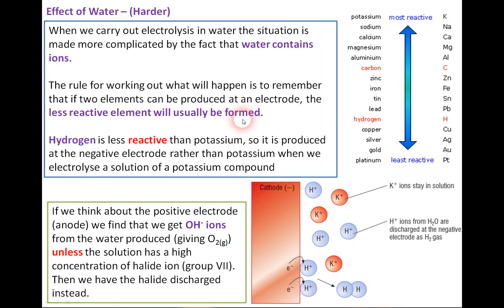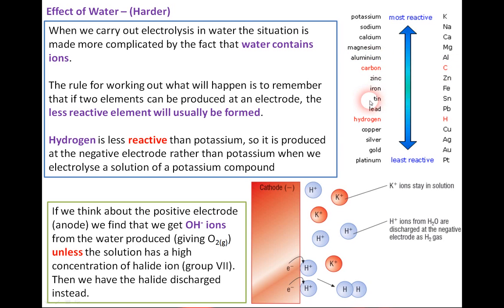The less reactive element will tend to form rather than react with other species. We use the reactivity series — here you can see it for metals, with hydrogen and carbon also included. It's useful to note that lead and copper sit below hydrogen in the series. For aluminium to zinc, carbon is placed in between — though carbon and hydrogen positions are not provided in the exam table.